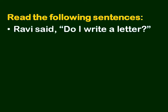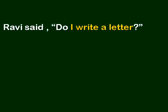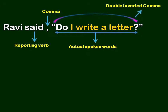Let us read the following sentences. Ravi said, 'Do I write a letter?' This is direct speech. Ravi asked whether or if he wrote a letter. This is indirect speech. Let us understand deeply the direct and indirect speech. Here, 'said' is a reporting verb. 'Do I write a letter' is the actual spoken words of the speaker, Ravi. It is divided into two parts by a comma, and we put the actual spoken words in double inverted commas. These are the features of direct speech.